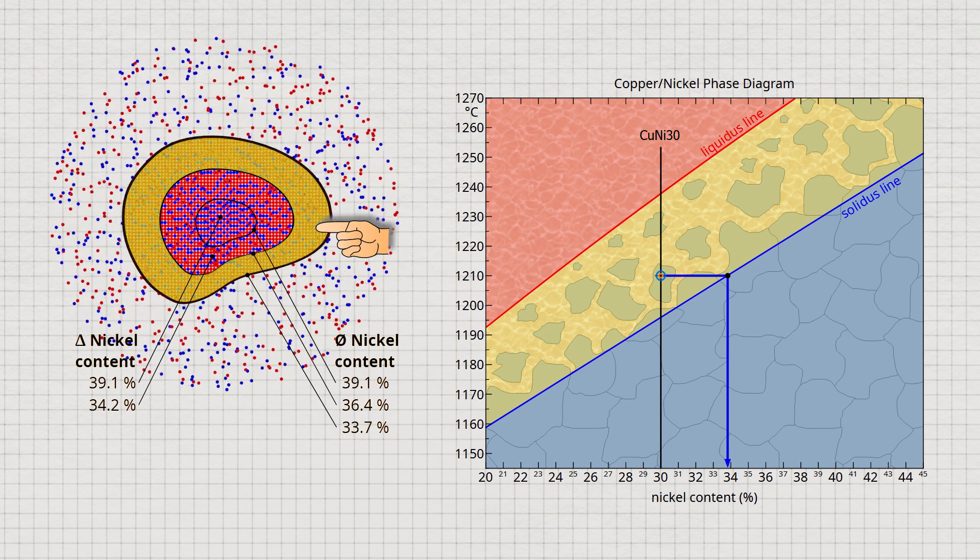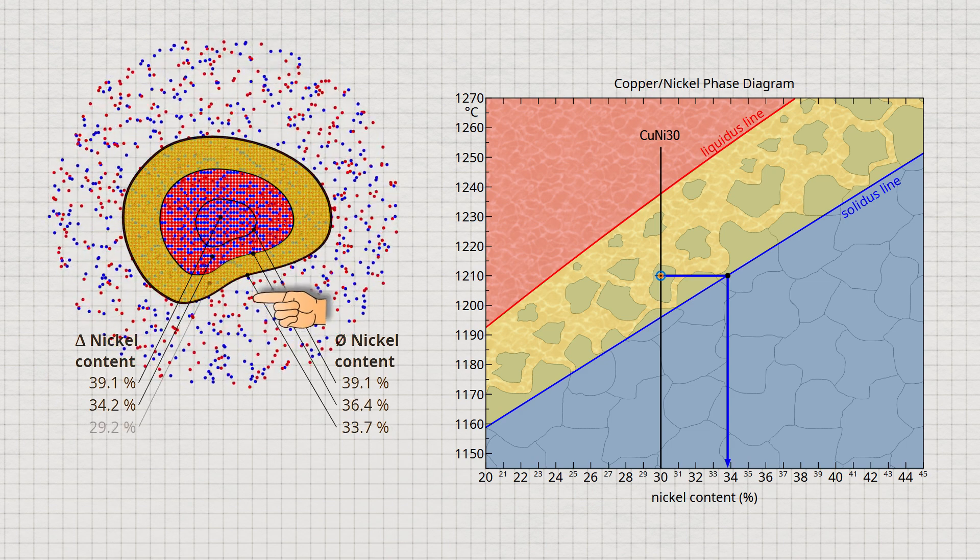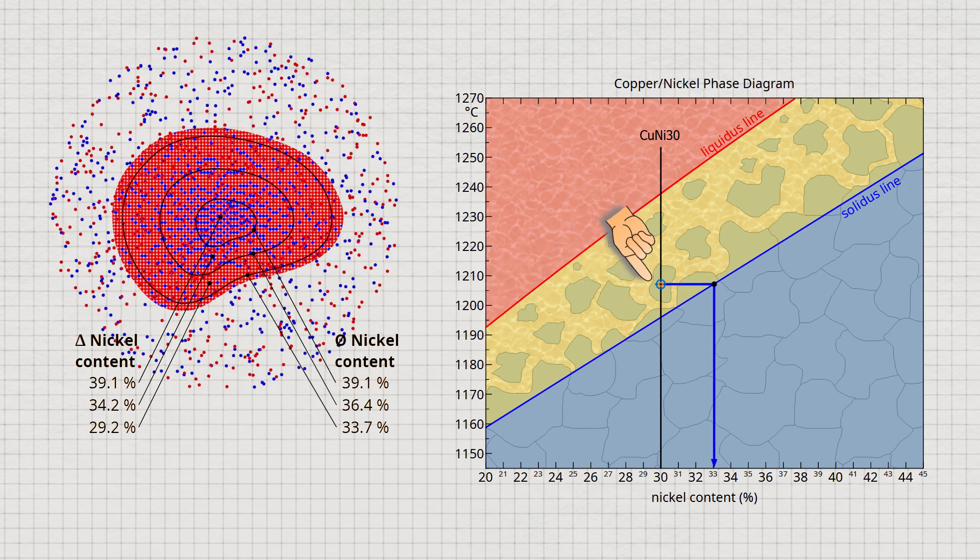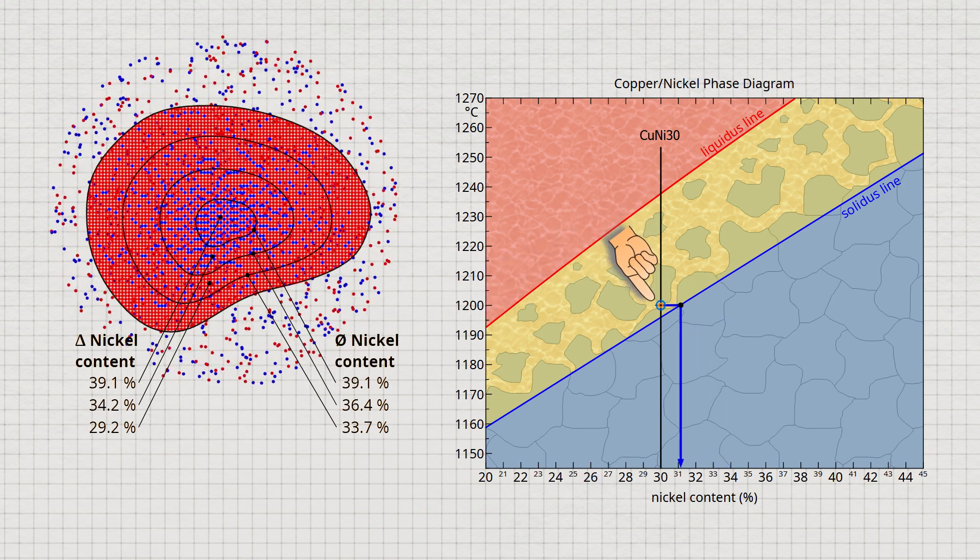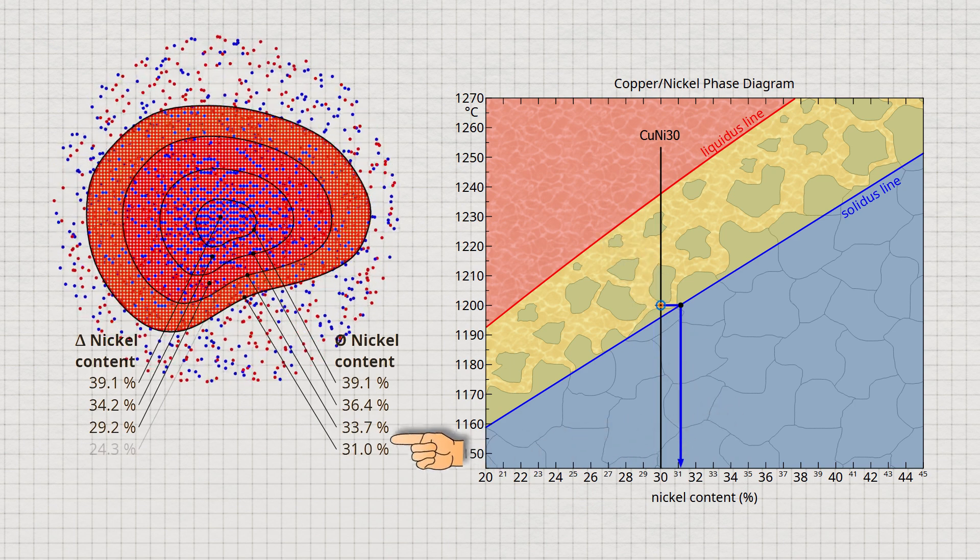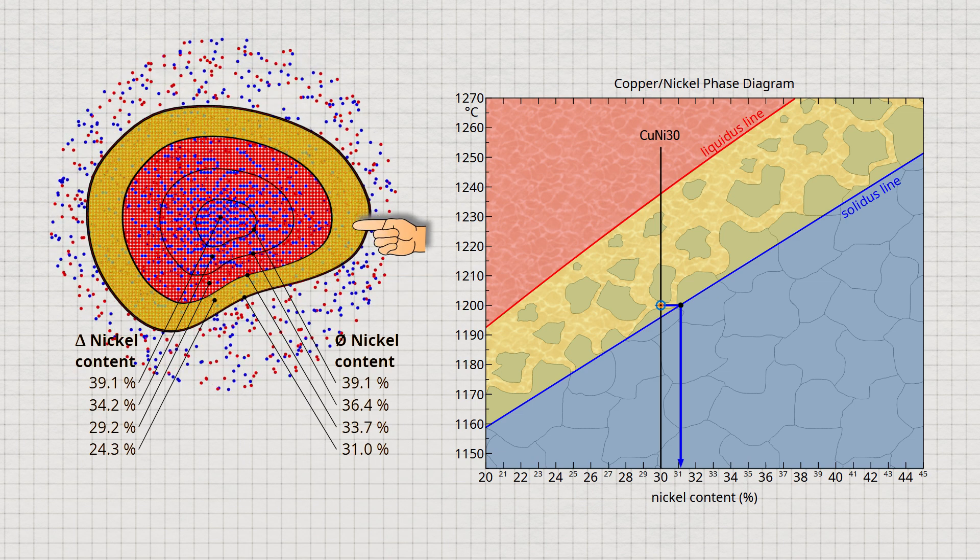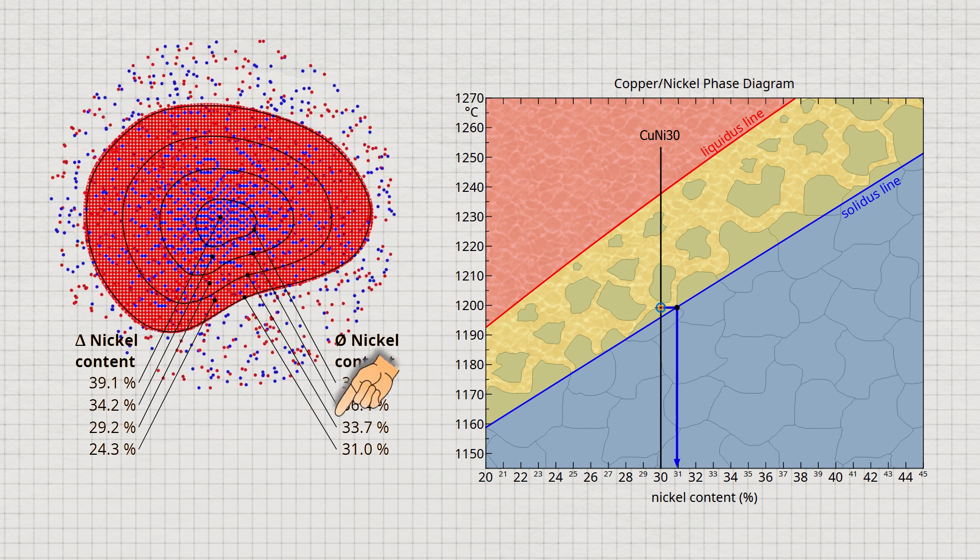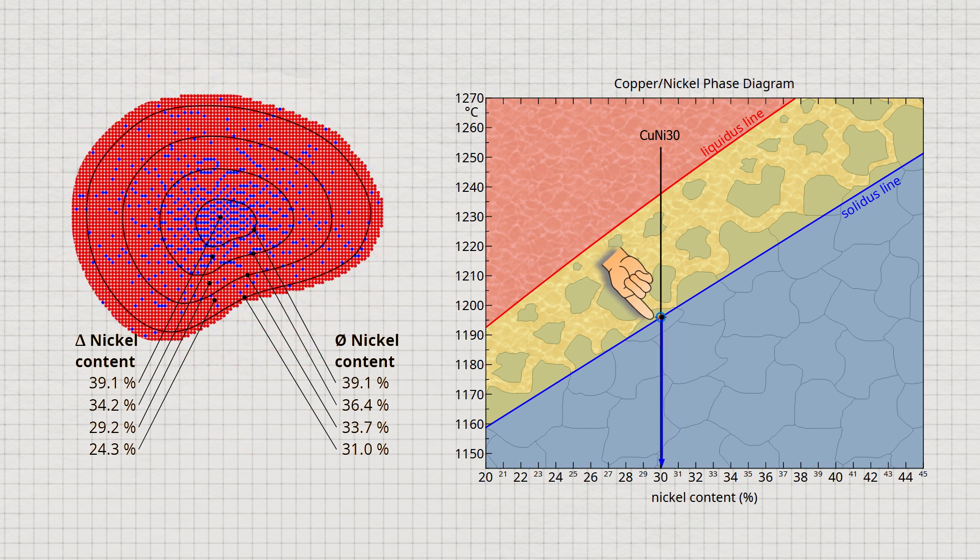Further cooling to 1,200 degrees Celsius reduces the average nickel concentration to only 31%. In this case, the newly solidified layer has a nickel content of only 24.3%. When the end of solidification is finally reached at 1,196 degrees Celsius, the average nickel content has obviously dropped to the alloy concentration of 30% nickel.